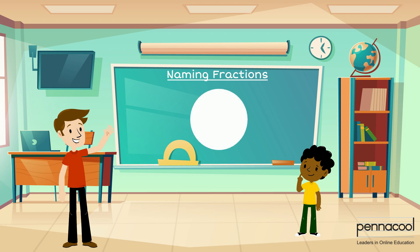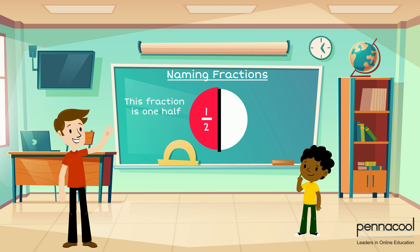Sir begins with a circle and cuts it into two equal parts. He shades one of the parts and asks Gabriel what his numerator and denominator would be. Gabriel identifies the numerator to be one and the denominator to be two. Sir then explains that when naming fractions, the numerator is called first and the denominator after. The fraction that represents one part out of two is read as one half. Two parts out of two would be read as two halves.